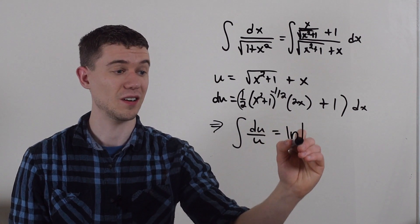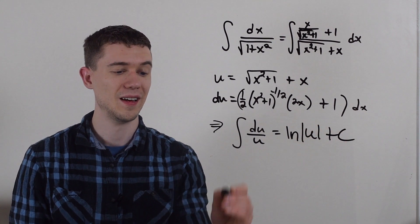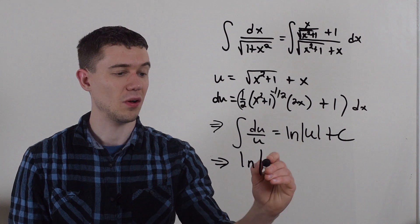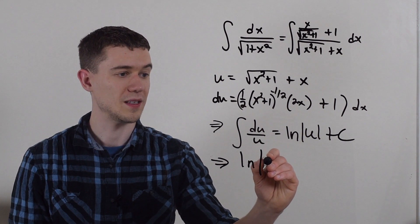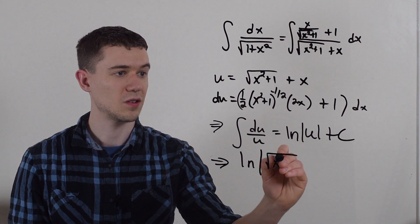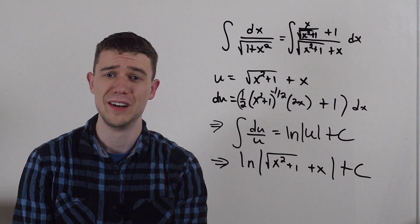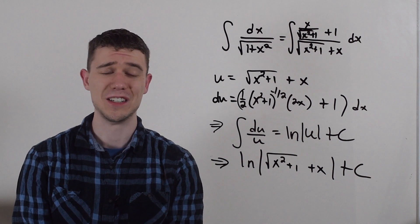That's just natural log absolute value of u plus c. And I know what u is. u is natural log of whatever I said u was, square root of x squared plus 1 plus x plus c. And I did this whole integral without doing any trig substitution.